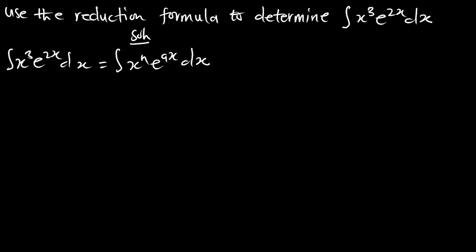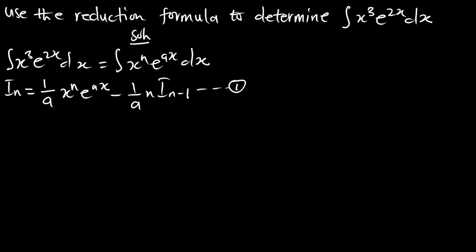Already, we know the final formula for this type of integration. We know that i_n = (1/a) * x^n * e^(ax) minus (n/a) * i_{n-1}. This is the reduction formula. Within the formula and the question given, our first n is the highest power of x, which is 3. So my n is 3. What about a? A is 2. So I can just input the values into the formula. My i_3 is going to be (1/2) * x^3 * e^(2x) minus (1/2) * 3 * i_2.